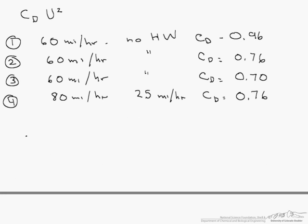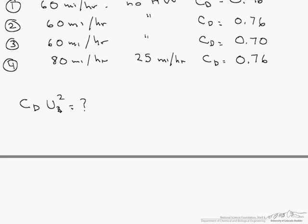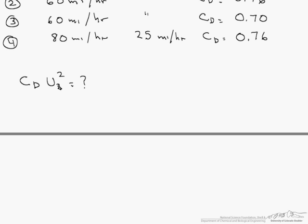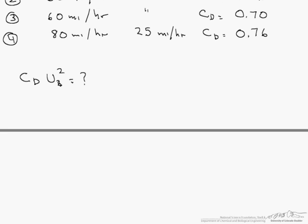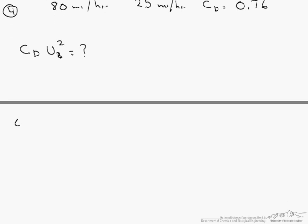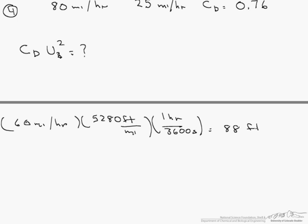Let's calculate this Cd times U squared for each one of our trucks. The first thing we have to do is change miles per hour into feet per second. So 60 miles per hour, we multiply that by 5280 feet because that is how many feet there are in a mile, and then one hour is 3600 seconds. So that is 88 feet per second. That is going to be our velocity for trucks one, two, and three.